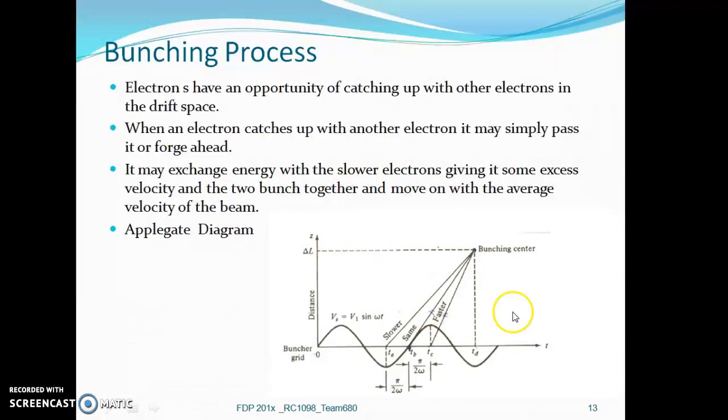This is an applegate diagram which helps us to understand the bunching process in a better way. We can see three electrons. One electron called the central electron labeled as same, since it is passing through the RF signal when no voltage is applied or when the gap voltage is zero, there will be no change in velocity. Another electron passes through the RF voltage when it is passing through the negative half cycle, so the velocity will decrease or it will become slower compared to the original velocity.